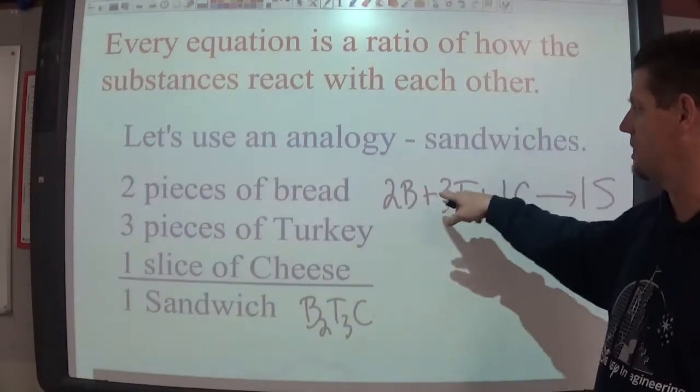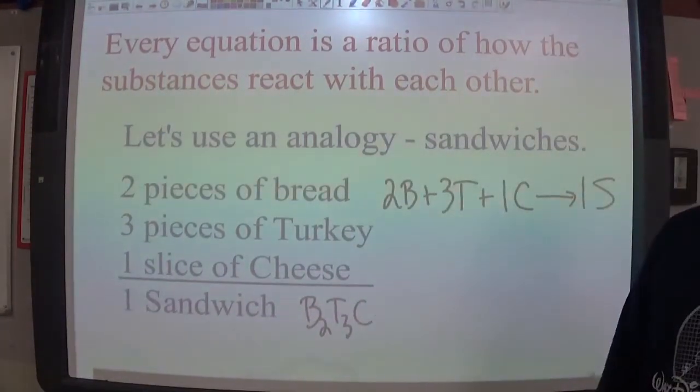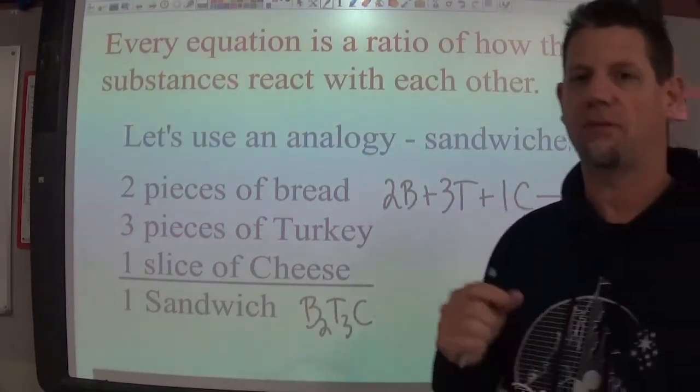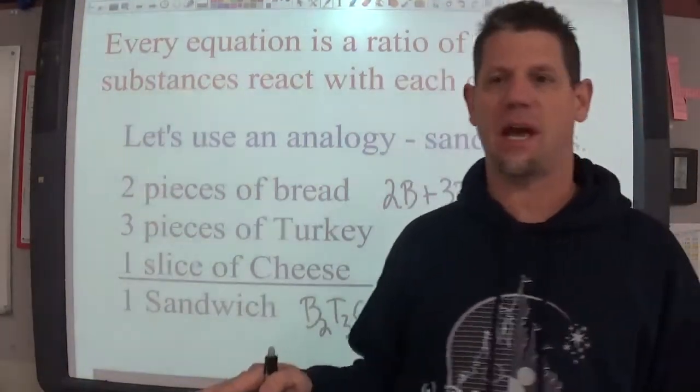So it takes two breads, three turkeys, one cheese to put together a sandwich. This is the ratio that we have to put these things together every time to have a sandwich.